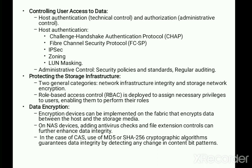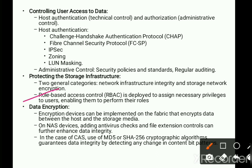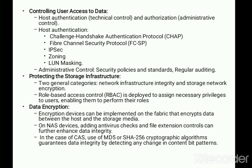Security controls fall into two categories: the first is network infrastructure integrity, and the second is storage network encryption. Whenever devices are used, we must make sure they are properly authorized before being added to the network — no device should be added without proper authorization. One example is role-based access control, in which the administrator grants privileges to users based on their roles. For example, if a person's role is to create accounts, they should not be given access to use those accounts.